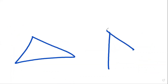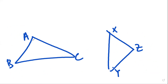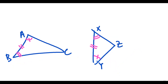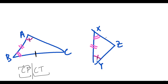Let us assume we have triangle ABC and angle XYZ. Let us assume you have proven these two triangles are congruent by applying ASA. Once I have proven that, I start looking at the corresponding parts. The side opposite to this angle is BC, therefore BC would be equal to XZ.